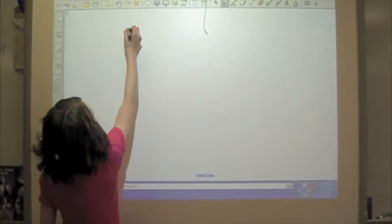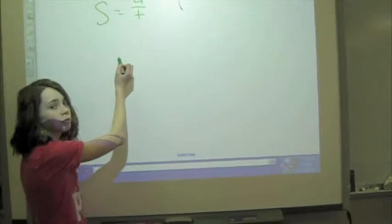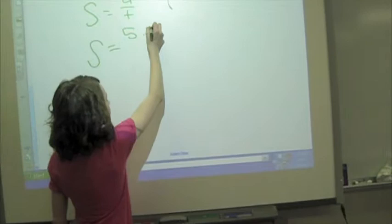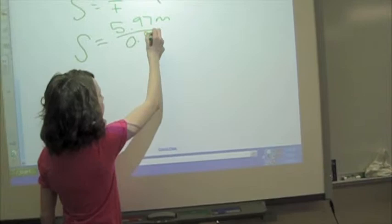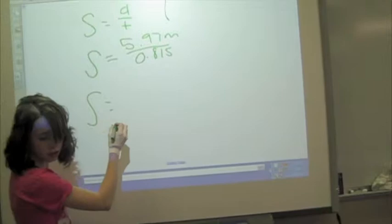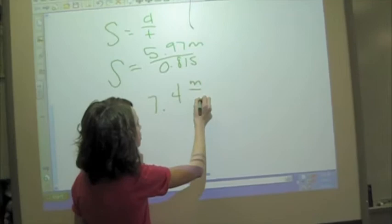The formula for speed is speed equals distance over time. Now, I'm going to substitute the numbers. So, speed equals 5.97 meters, divided by 0.81 seconds. When I divide that, I get 7.4 meters per second.